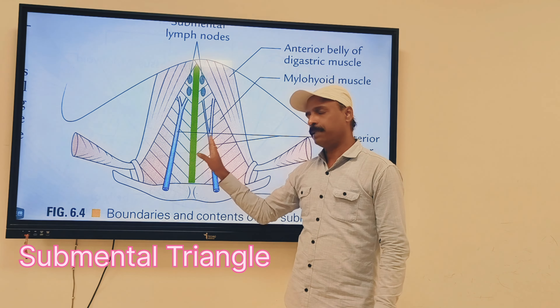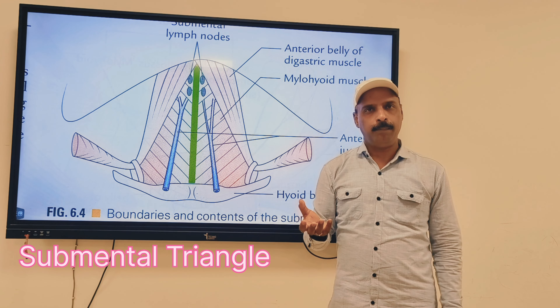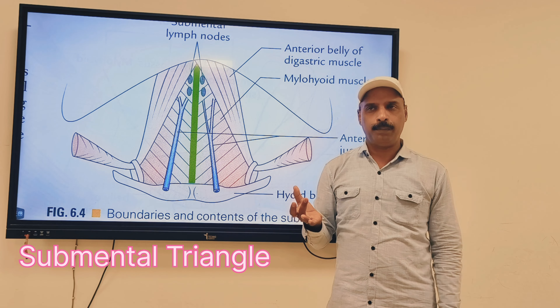The submental triangle contains two to four small submental lymph nodes. The draining area includes the superficial part of the submental region, the adjoining gum, lower part, anterior part of the floor of the mouth, tip of the tongue, and the central part of the lower lip. All of these are drained by the submental lymph nodes — very important. If the draining area is infected, you get enlargement of these lymph nodes.